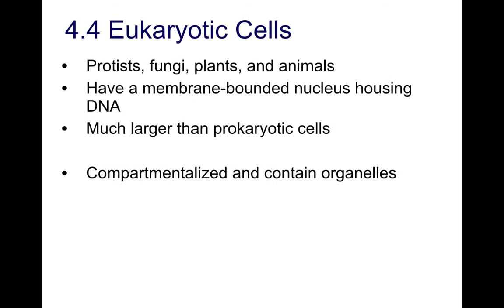Eukaryotic cells contain many different types of protists, fungi, plants, and animals. What they all share is the fact that their genetic material is stored within a specific structure called the nucleus. The nucleus is enclosed within a membrane-bound structure, and this really is a key characteristic of eukaryotic cells. The structures are housed within specialized compartments.